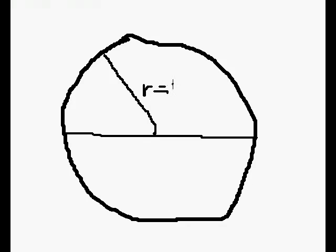Let's draw a new circle with a middle point. Now what we do is draw a diameter and also a radius. Now the radius equals ten centimeters. This is the outer part of the circle. Then how much is the diameter?